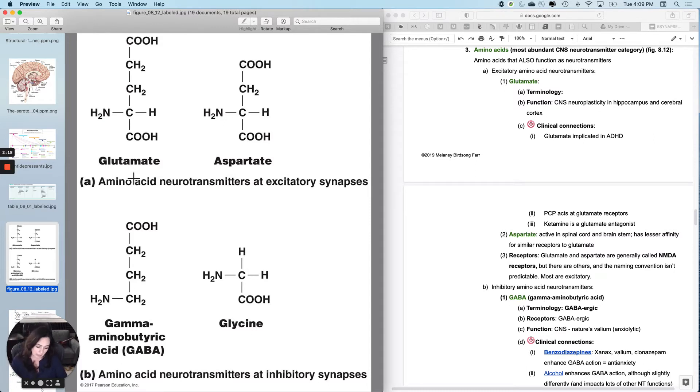And then ketamine, which is a drug that is used as an anesthetic in both non-human mammals and also humans, it inhibits glutamate. It's a glutamate antagonist.